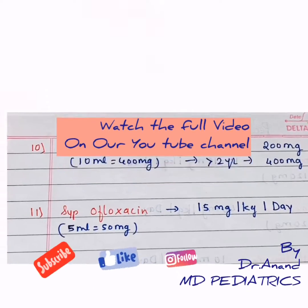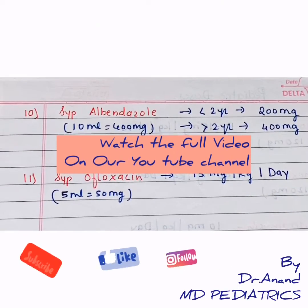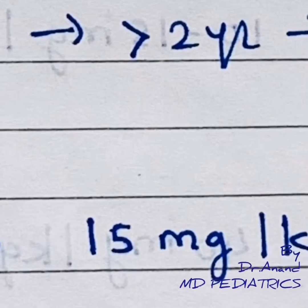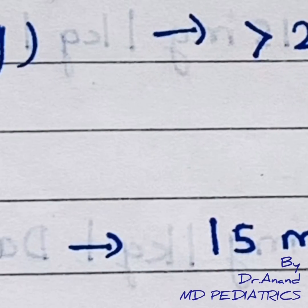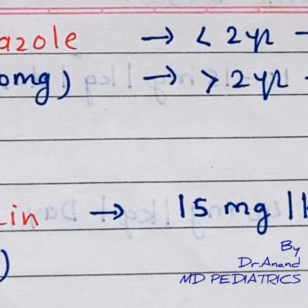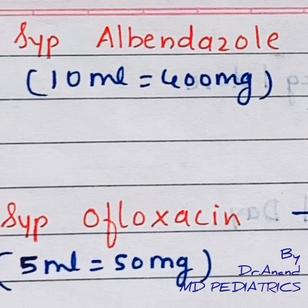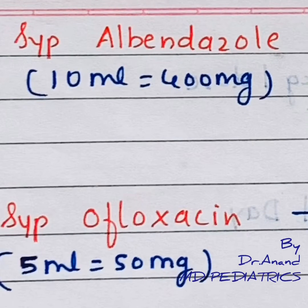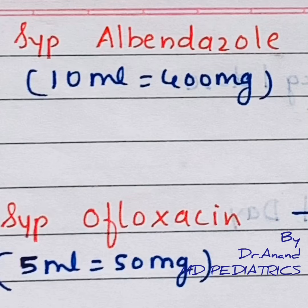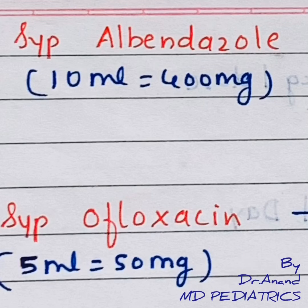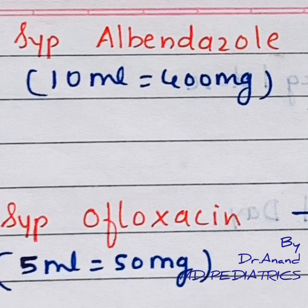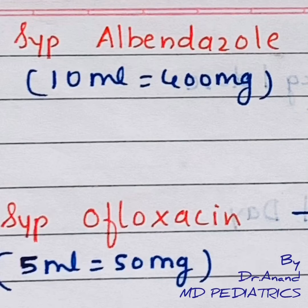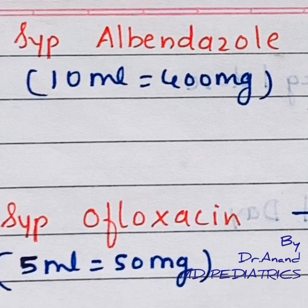Coming back to albendazole in neurocysticercosis — the dose is 15mg per kg per day in 2 divided doses for 28 days.